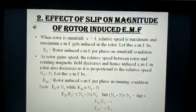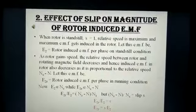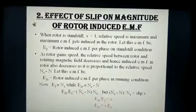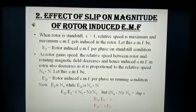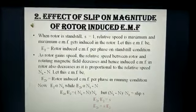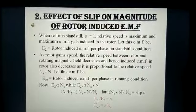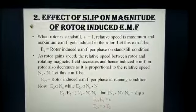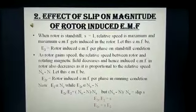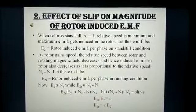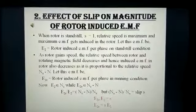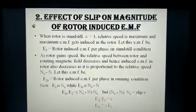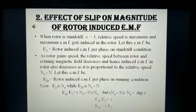Effect of slip on magnitude of rotor induced EMF. We know that the speed of the induction motor depends on the induced EMF on the rotor. During the standstill condition, slip is equal to 1 and speed is equal to 0. At this condition, the maximum EMF induced in the rotor depends on the maximum relative speed. The maximum relative speed obtained is the synchronous speed NS. Thus, the rotor induced EMF E2 is directly proportional to the synchronous speed NS.